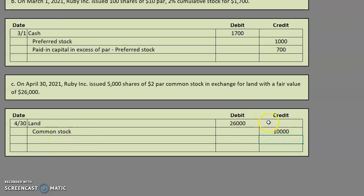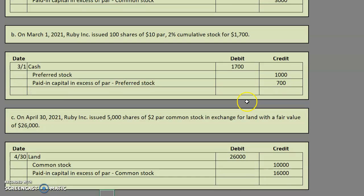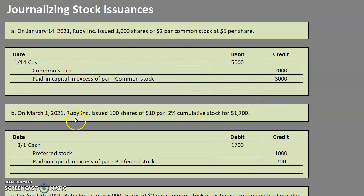Just like before, we simply plug to make it equal, and that plug account will be paid-in capital in excess of par — common stock. So that's a quick video going over journalizing stock issuances. Keep in mind that while stock issuances may seem a little like sales, they are not sales of investments — it is literally a sale of ownership in the company, which is very different from buying and selling on the actual stock market. Keep practicing those stock issuances, leave any questions in the comments below, and until next time, happy studying.